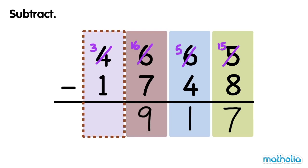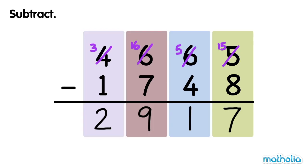Finally, we subtract the thousands. 3 thousands minus 1 thousand equals 2 thousands. 4,665 minus 1,748 equals 2,917.